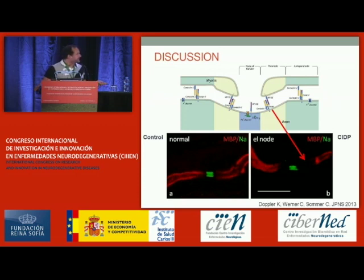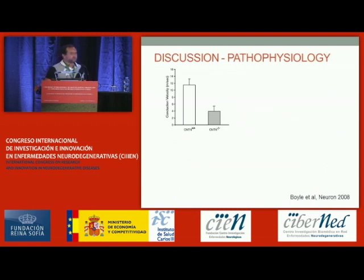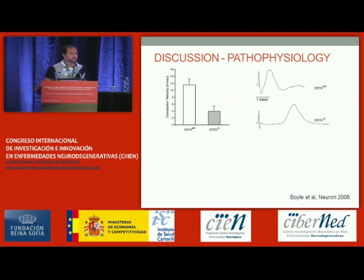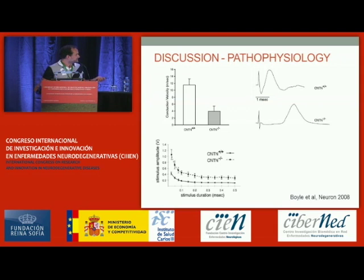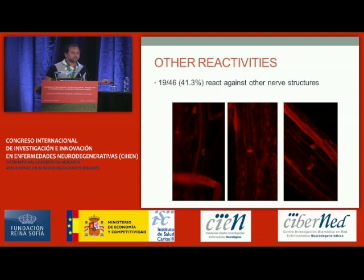Coming back to where contactin-1 and Caspr are located, and where demyelination starts — we believe these autoantibodies are pathogenic, although we have to confirm this. Also, the contactin-1 knockout mouse shows slow conduction velocities, prolonged latencies, and decreased amplitudes — all features present in our patients. Additionally, almost 41% of patients reacted against other nodal or myelin nerve structures, and some patients who didn't react against hippocampal neurons had a paranodal pattern of staining.